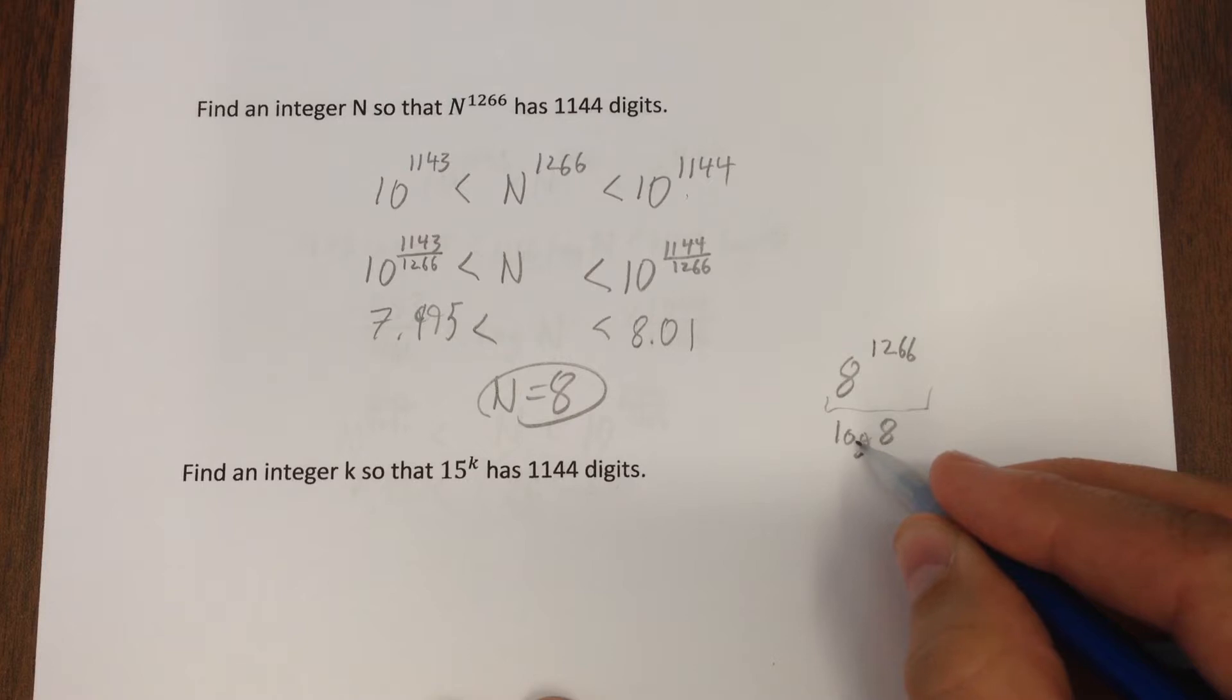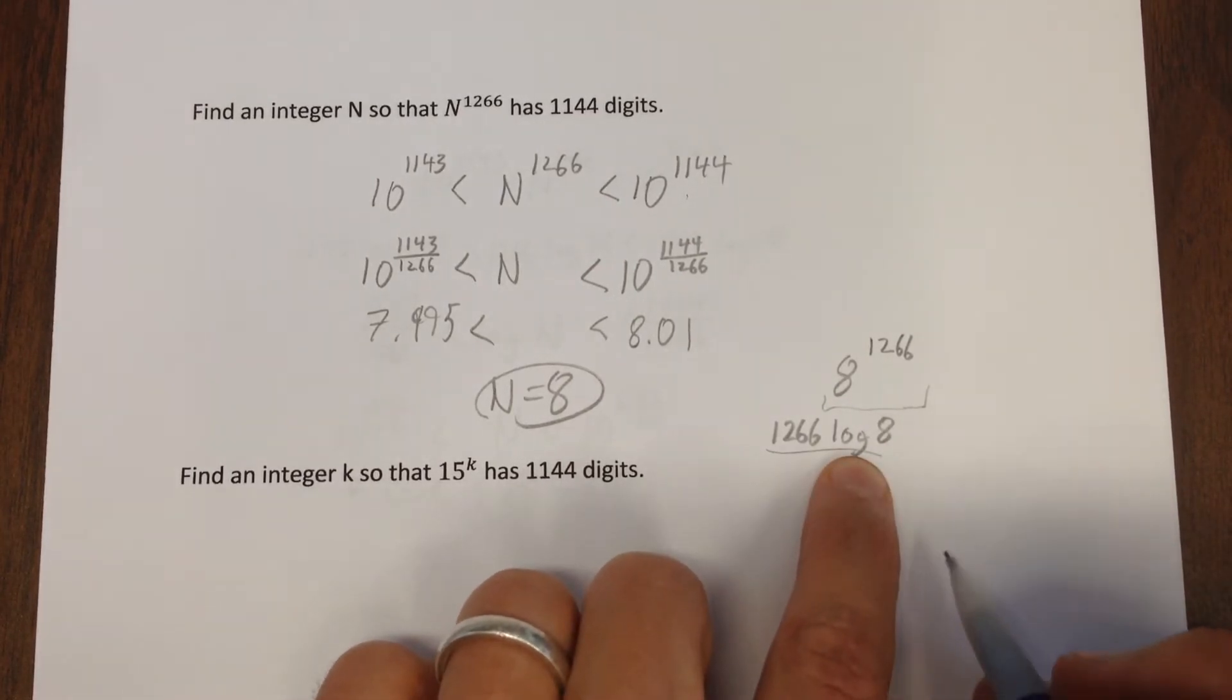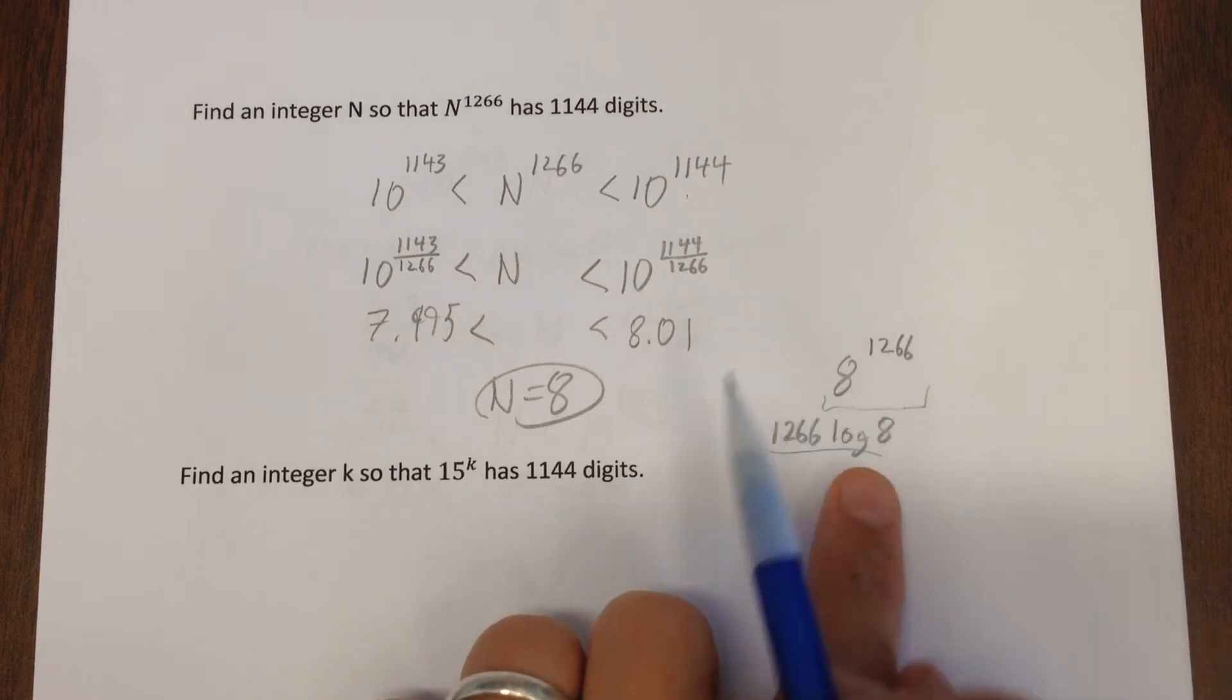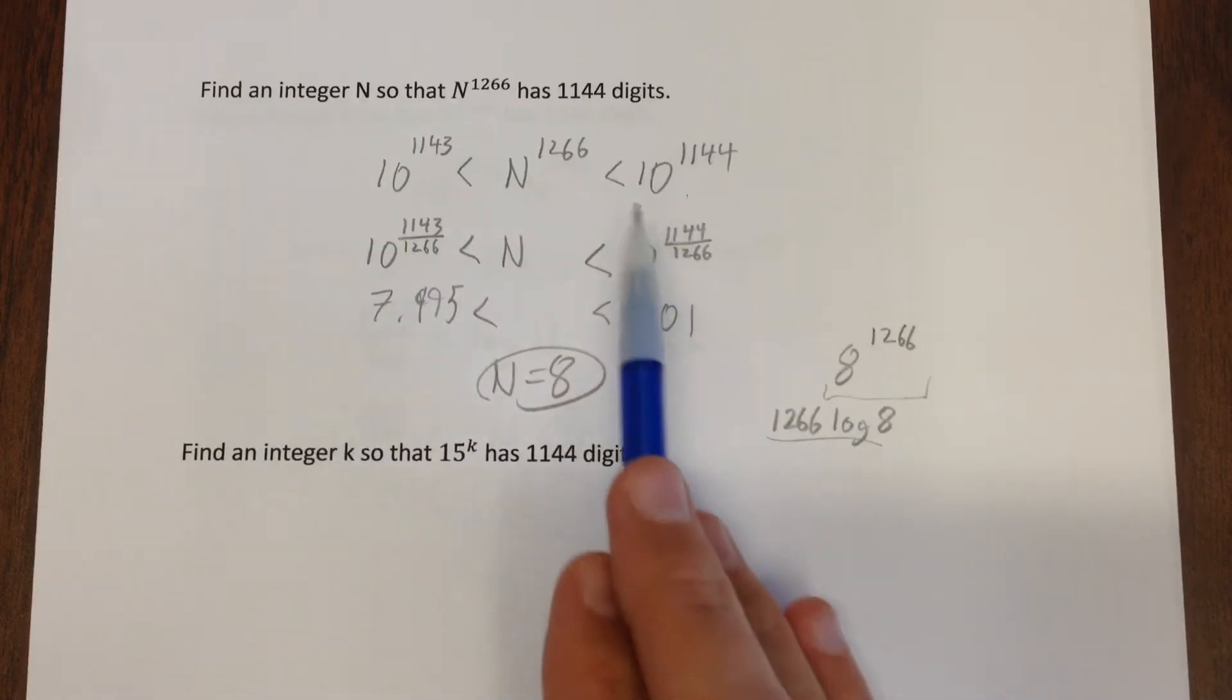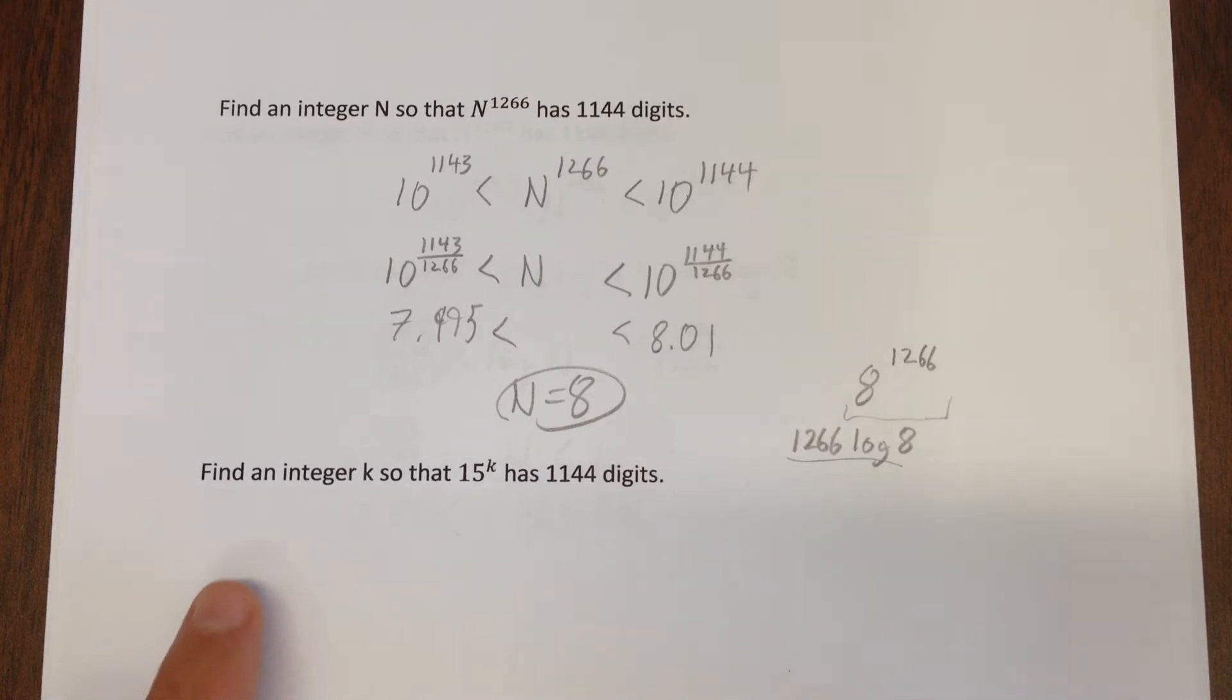Of course our standard way of dealing with that is take the log of that, which of course is log base 10 of 8 to the 1266th, by the power rule you can bring that out, crunch out how many digits that'll have, and it'll have, that'll be a number just smaller than 1144, so it'll have 1144 digits.